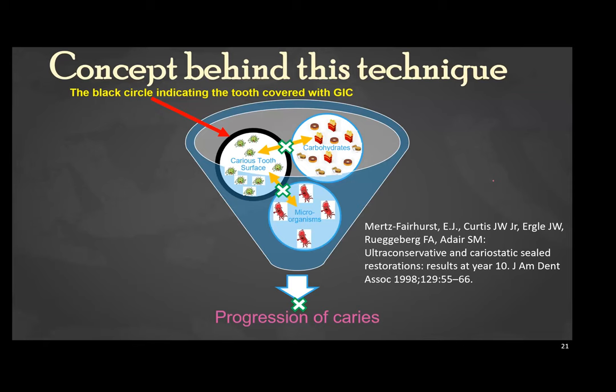The concept is that you are covering the carious area — represented by the black circle — with glass ionomer cement, or in the Hall Technique, covering with a stainless steel crown. The main reason is that the carious surface and microorganisms are not allowed to get exposed to carbohydrates in the oral cavity. As a result, the microorganisms present inside will die from starvation because there are no carbohydrates reaching them and no fermentation takes place. The glass ionomer cement at the cavosurface margin must be completely sealed to create a starvation environment for the microorganisms inside.